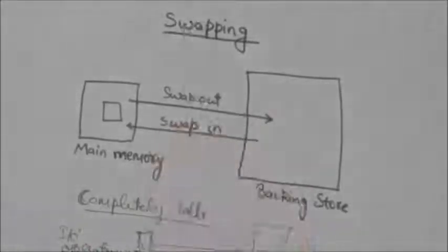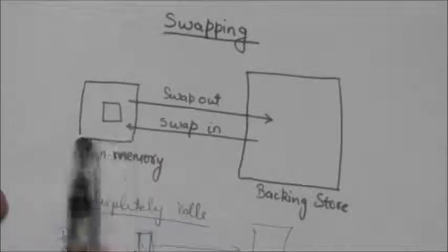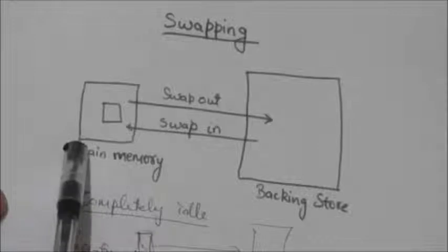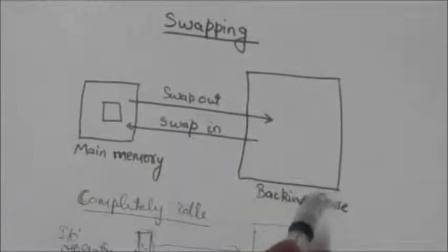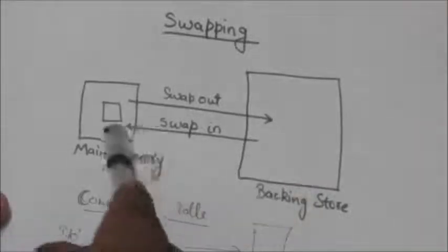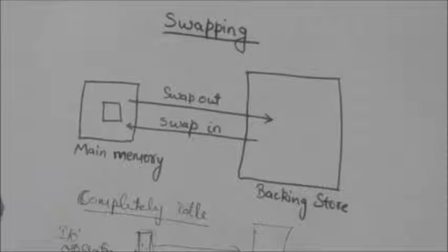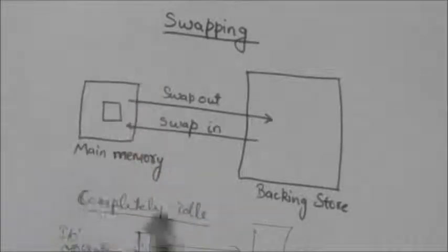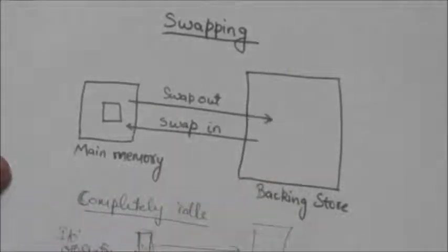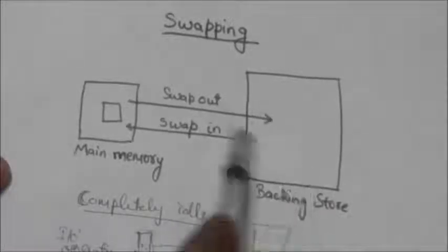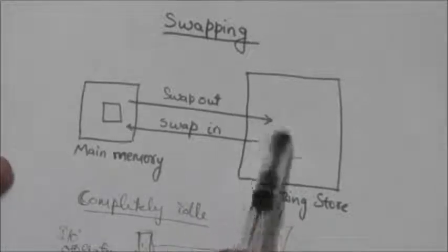Hello friends, welcome back. In this tutorial we will study about swapping. A process to be executed should be in main memory, but sometimes a process which is in main memory has to be swapped out to backing store temporarily, and after some time that process will be brought back in main memory to complete its execution. For example, consider a multi-programming environment in which a round-robin scheduling algorithm is used. Suppose a process is being executed by the CPU and the quantum expires, so the process has to release the CPU. This process can be swapped out to backing store, and some other processes can be brought back in main memory so that they can be executed.